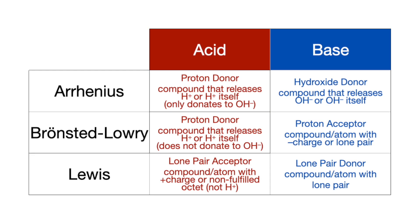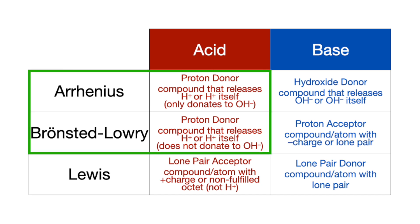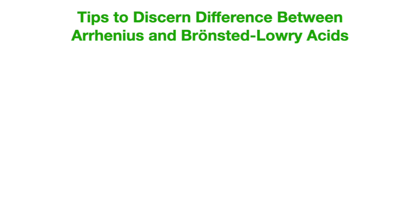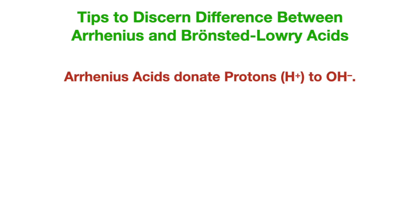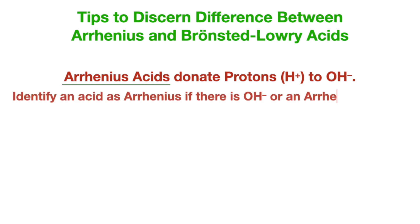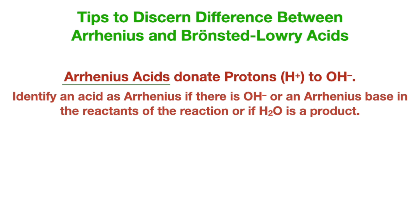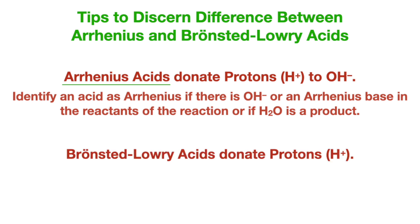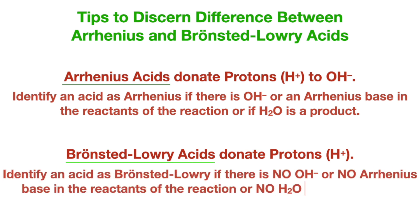One of the most frequent questions I get is what's the difference between an Arrhenius acid and a Bronsted-Lowry acid since they both are proton donors. Arrhenius acids donate protons to hydroxides, so identify an acid as Arrhenius if there is a hydroxide in the reaction or if there is water as a product. Bronsted-Lowry acids also donate protons; however, only identify acids as Bronsted-Lowry if there is no hydroxide in the reactants and no water in the products.